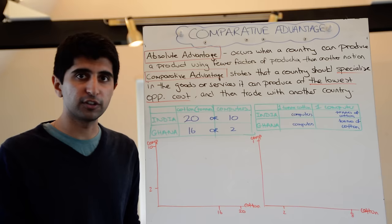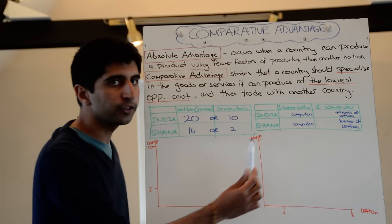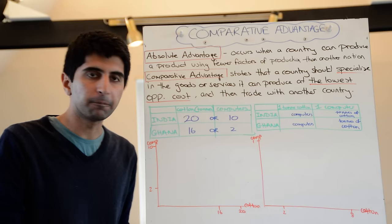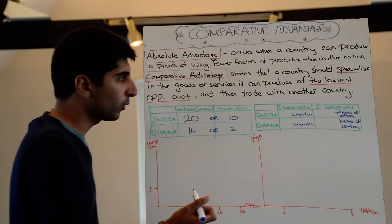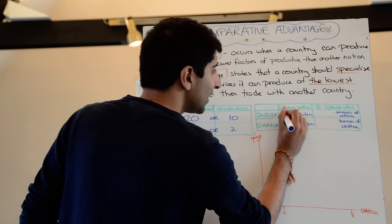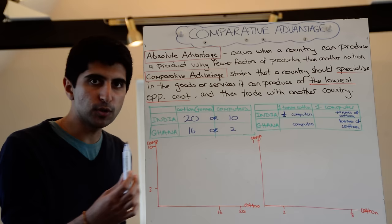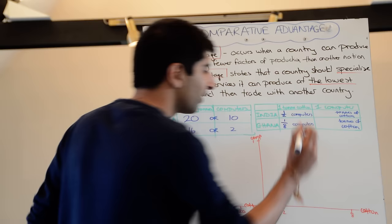Let's look at cotton production first. For India to produce one tonne of cotton, how many computers are they giving up? To work that out, divide both sides by 20 — so to produce one tonne of cotton, India are giving up half a computer. What about Ghana? For Ghana to produce one tonne of cotton, how many computers do they give up? Divide both sides by 16 — they're giving up an eighth of a computer.